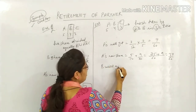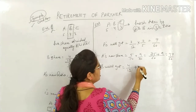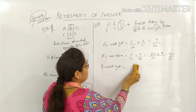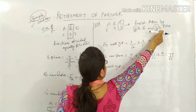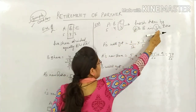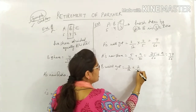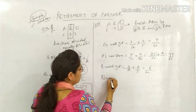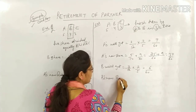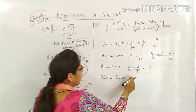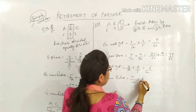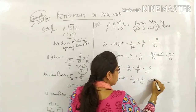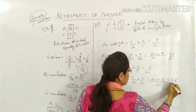B will get: B's old share was 4/12, plus 6/60 which B receives from C's share. Taking LCM of 12 and 60 = 60: 60÷12=5, multiply 5 by numerator 4 to get 20. Then 20+6 = 26. So B's new share is 26/60.